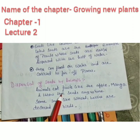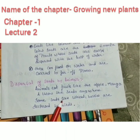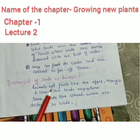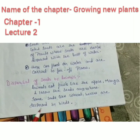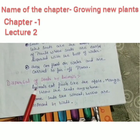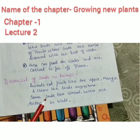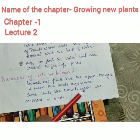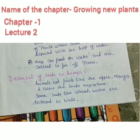Dispersal by animals: animals eat fruit like apple and mango and throw the seeds anywhere. Some seeds like wheat and berries are dispersed by birds — these small seeds are carried by birds from one place to another.